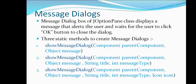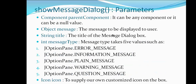Let's look at what these parameters mean. The component is generally the parent component through which we want to display the dialog — it can be null. The object message is the message we want to display to the user. The title appears at the top of the dialog box. The message type gives a signal to the user about whether something relates to an error, information, warning, question, or plain message.